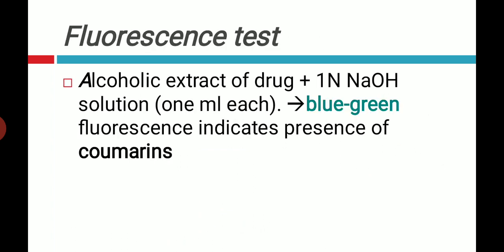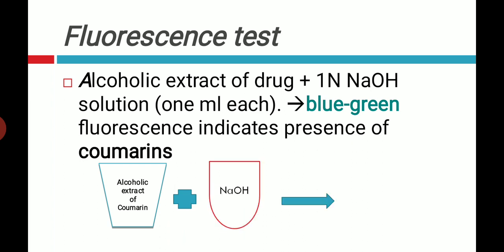The next is the fluorescence test. Again, use an alcoholic extract of the coumarin-containing drug. You can write down the drugs which contain coumarin and saponins in your notebook or in the comments below this video. To the alcoholic extract of coumarin, add NaOH. Because of the change in pH, there will be a bluish-green color fluorescence observed in the test tube.